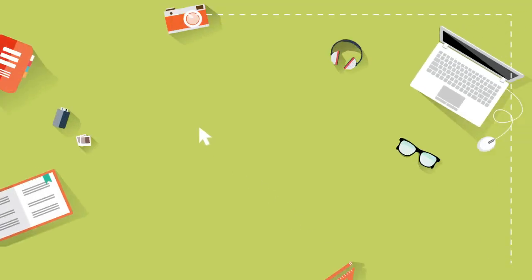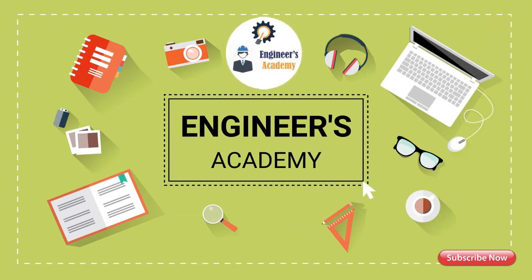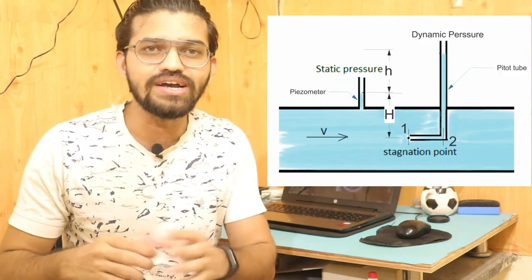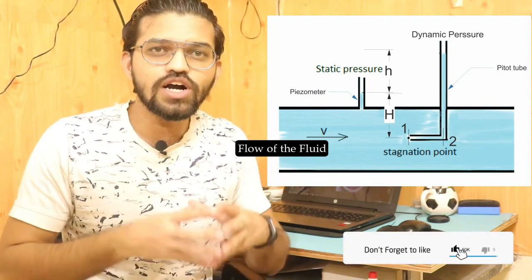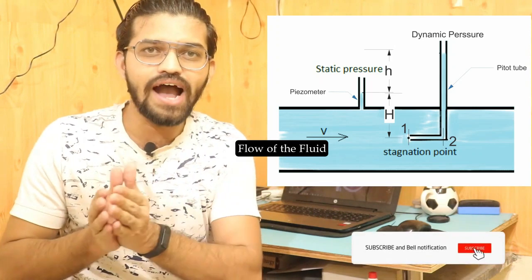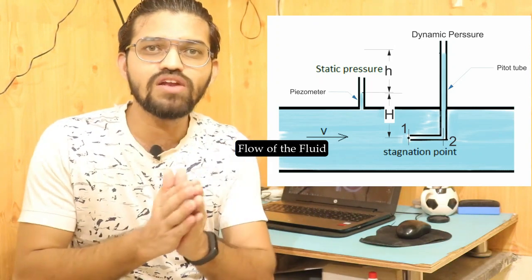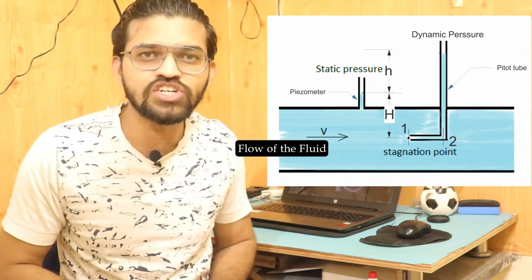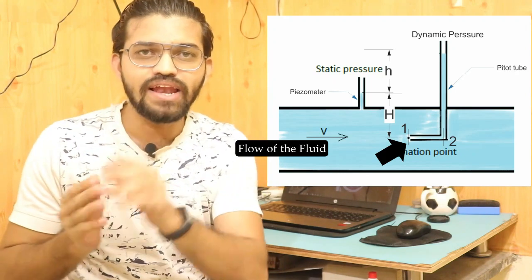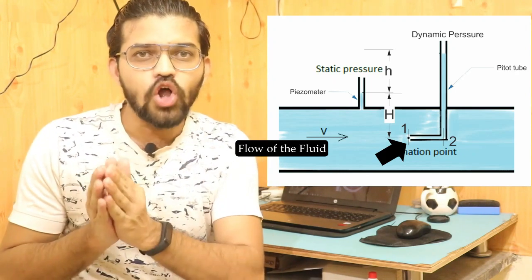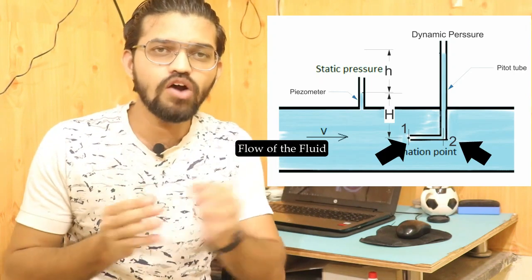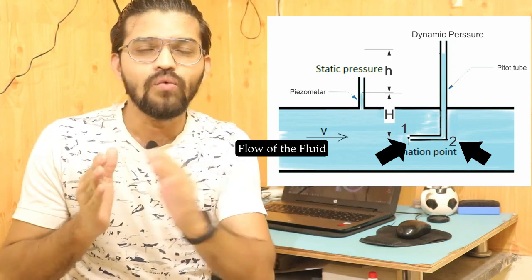The pitot tube is a simple hollow glass tube bent at 90 degrees, with both ends open. When immersed in a flowing fluid against the flow direction, the fluid enters the pitot tube. The point where the fluid enters is called section 1, and at the 90-degree bend it is called section 2.